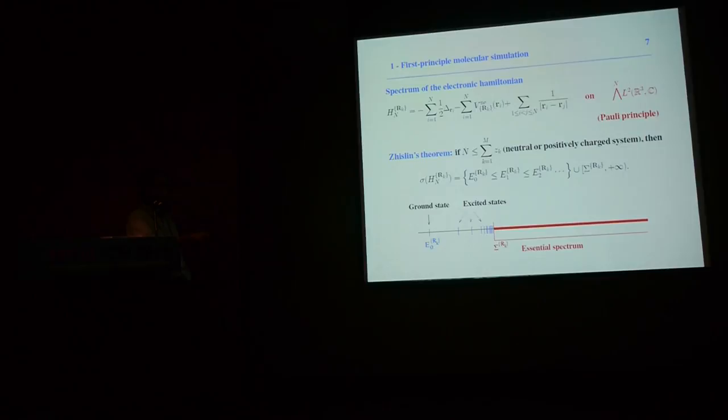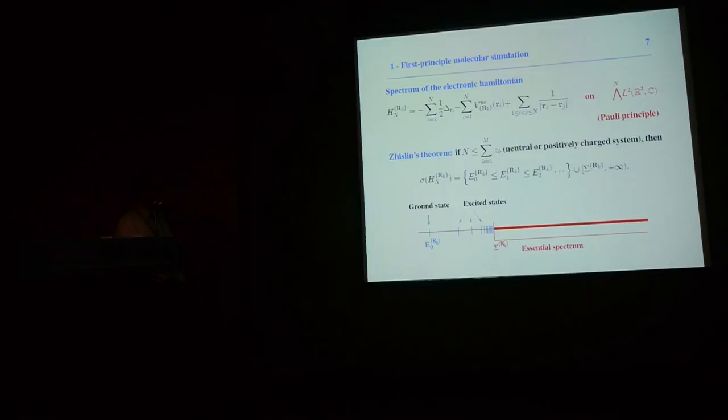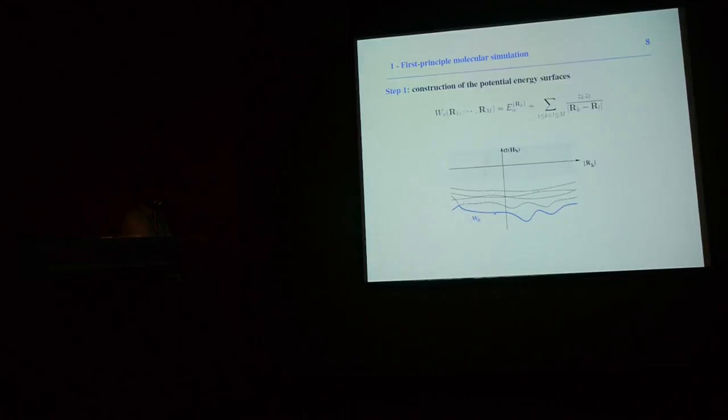The operator is bounded below. Its essential spectrum is a half-line starting from σ and going to plus infinity. Its discrete spectrum consists of an increasing sequence of eigenvalues accumulating at the bottom of the essential spectrum. We denote by E_k the k+1-th eigenvalue of H_N, counting multiplicities. All these eigenvalues are functions of the nuclear positions, which are parameters of this problem.